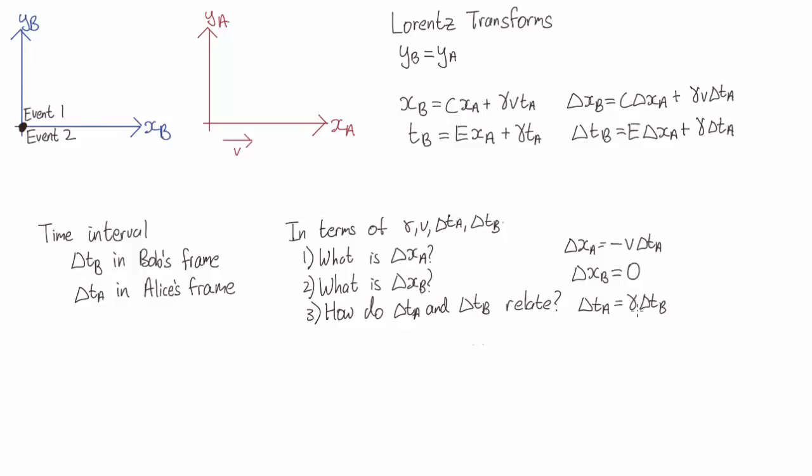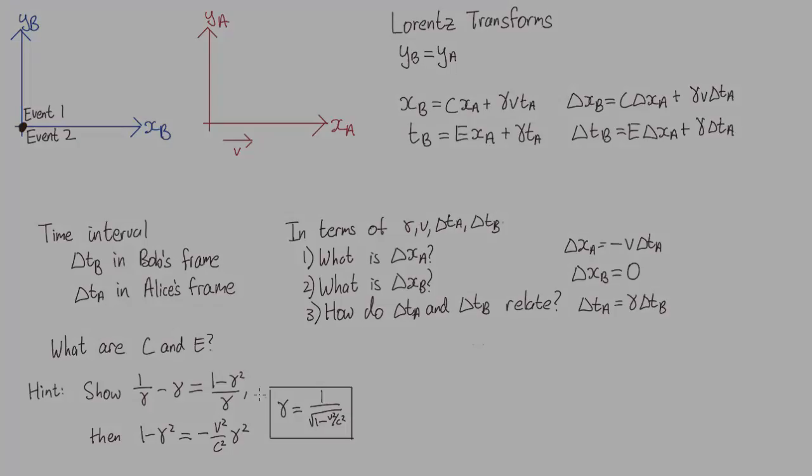So now we can substitute these values in and solve for c and e. But in this case, we have to do a little bit more algebra. So as a hint, first show that 1 on gamma minus gamma is 1 minus gamma squared over gamma. And then 1 minus gamma squared is minus v squared on c squared gamma squared, where gamma is a Lorentz factor. These identities should make your calculations a little bit easier.